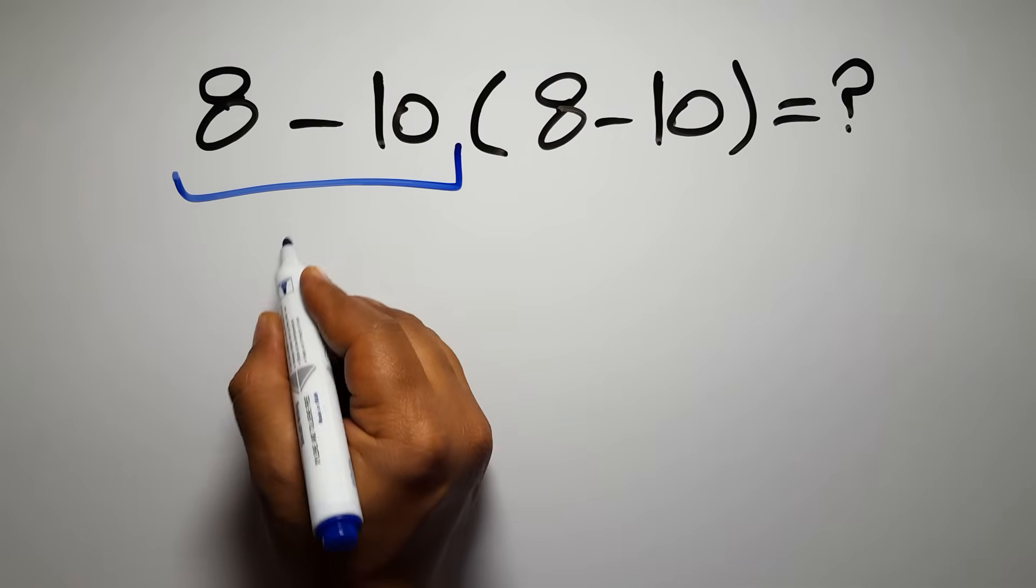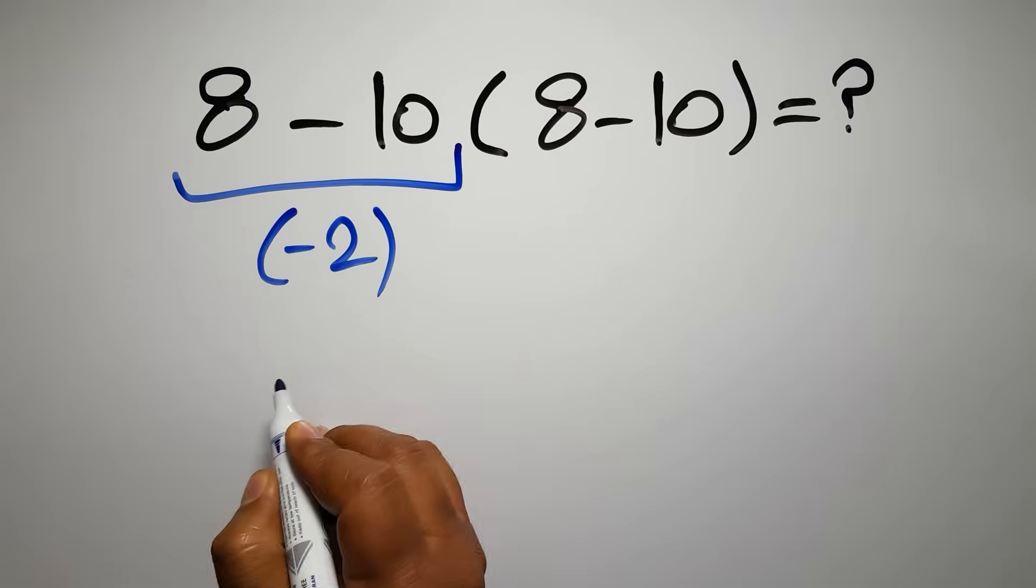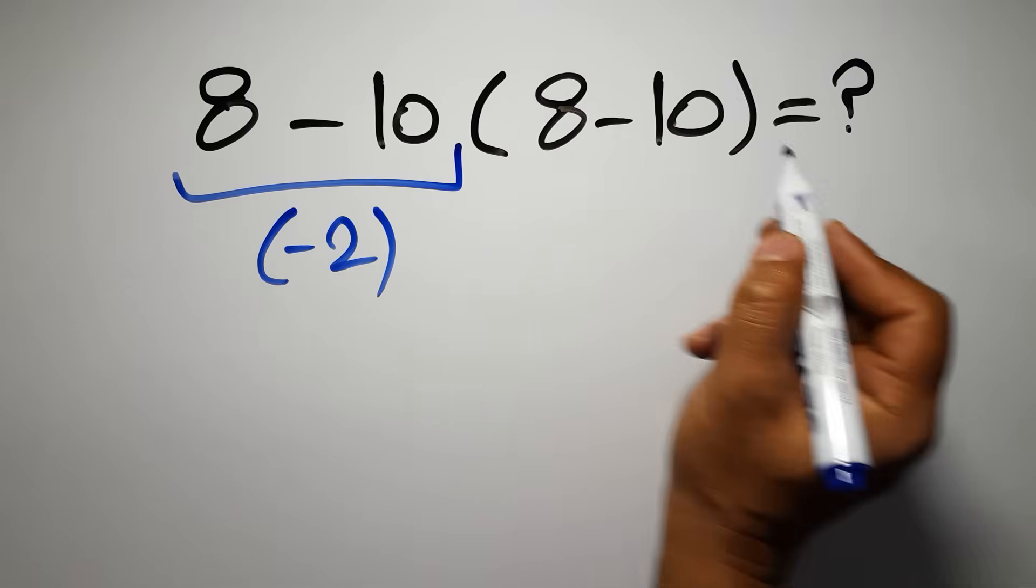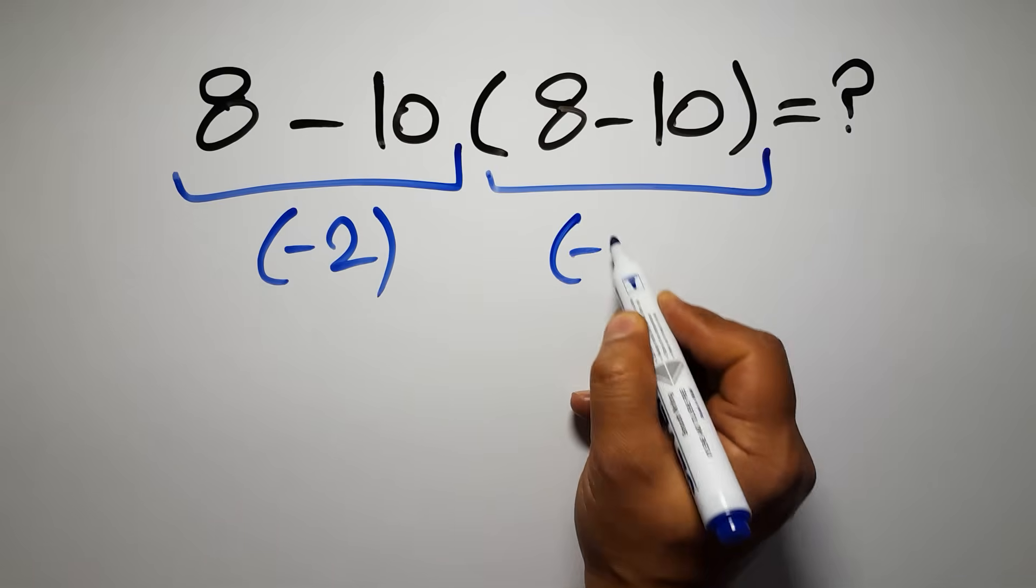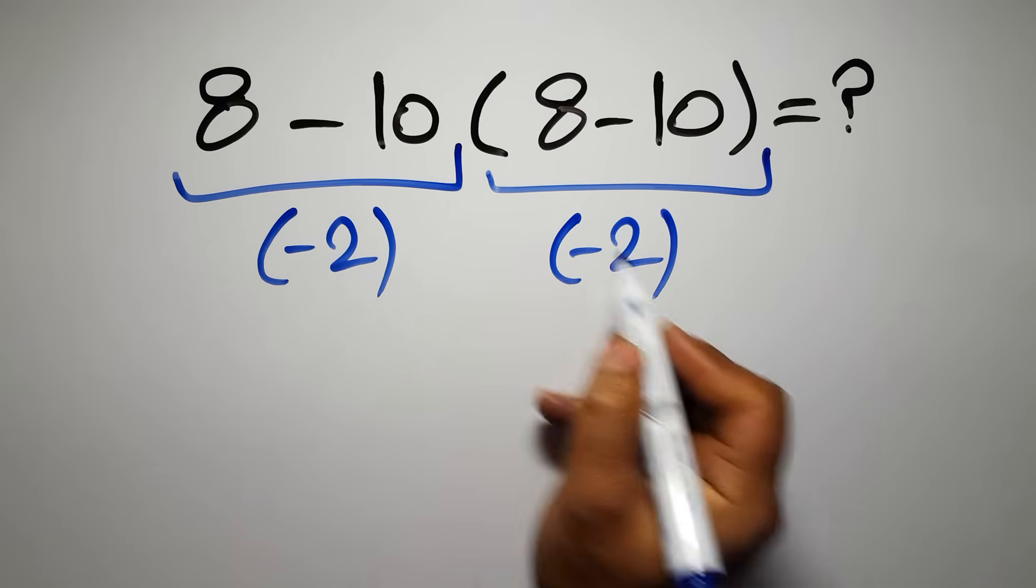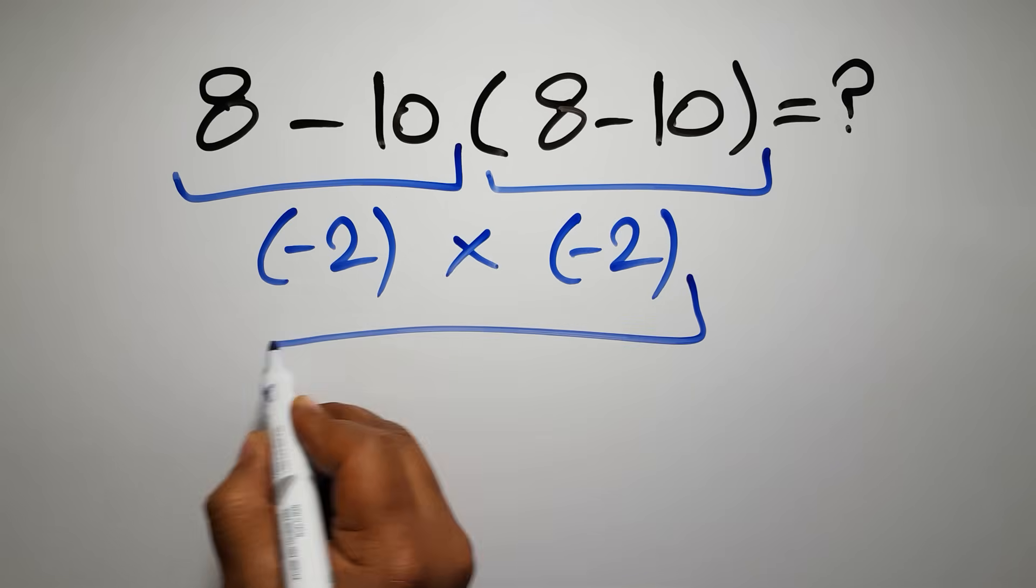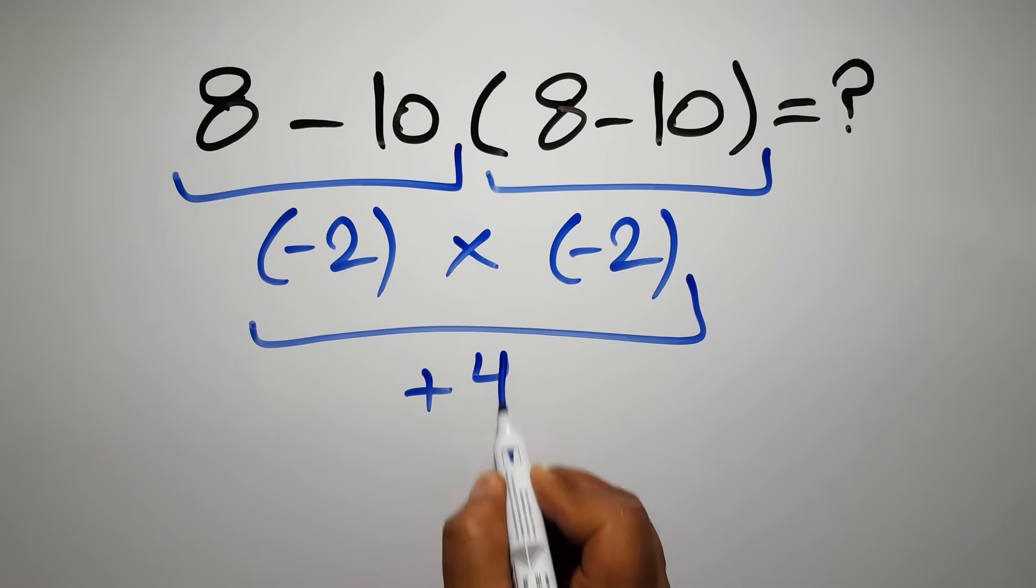8 minus 10 is just negative 2, and again here we have 8 minus 10, negative 2. So negative 2 times negative 2 is just positive 4. But this answer is not correct because according to the order of operations,